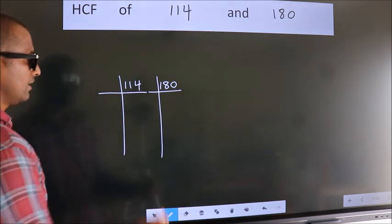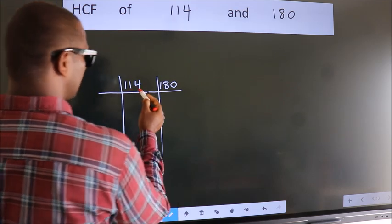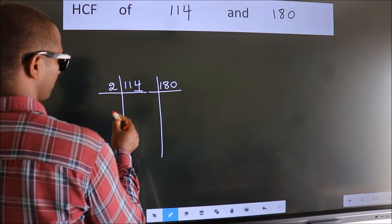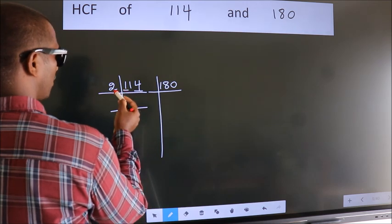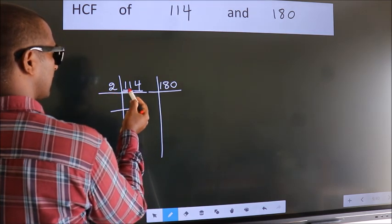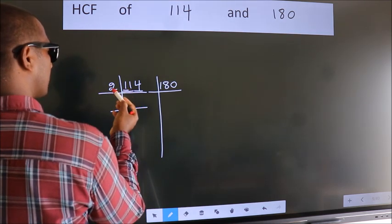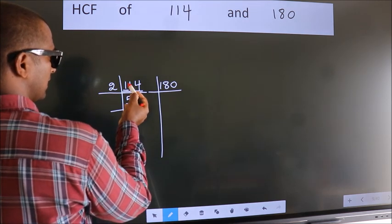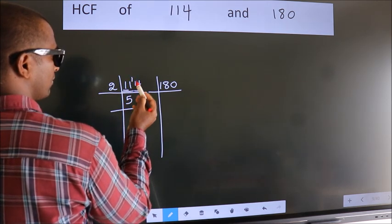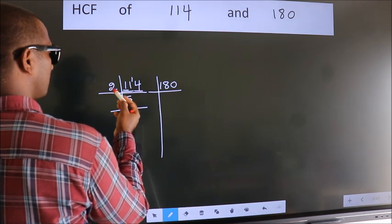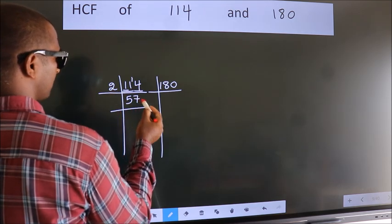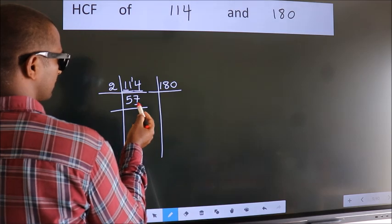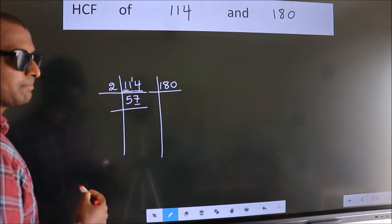In this number, last digit 4, even number, so take 2. First number 1 smaller than 2, so 2 numbers 11. A number close to 11 in 2 table is 2 fives 10. 11 minus 10, 1, 1 carried forward 14. When do we get 14 in 2 table? 2 sevens 14. Now last digit 7 not even, so this number is not divisible by 2.